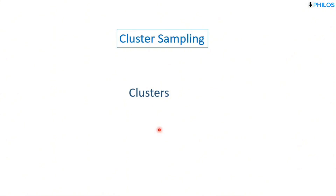Or you randomly select a subset of students from each of the 11 selected universities — that is called two-stage cluster sampling. In another tutorial we'll look at non-probability or non-random sampling techniques. Please like this video, share it, and subscribe to the channel for more tutorials. Thank you and see you in the next tutorial.